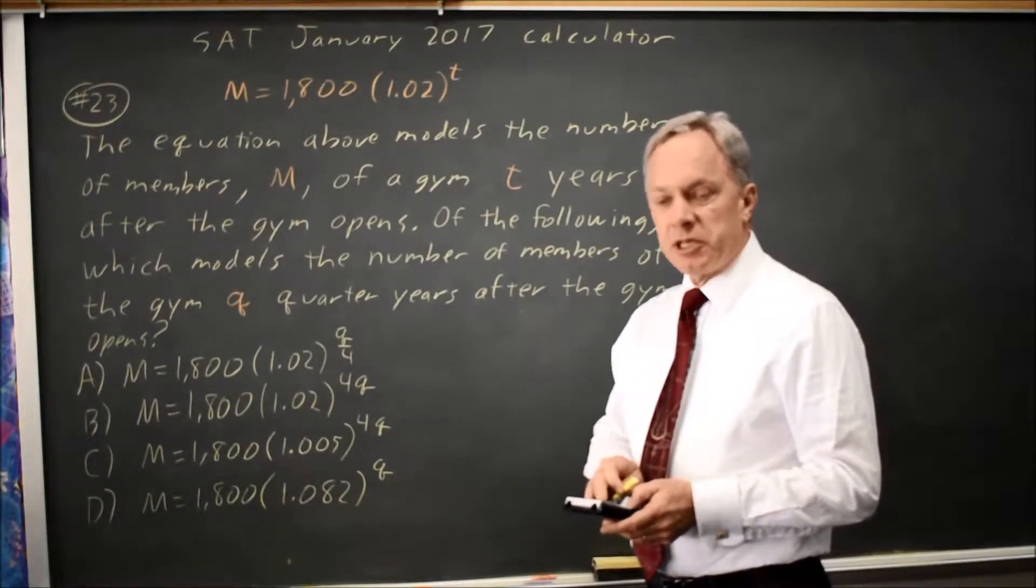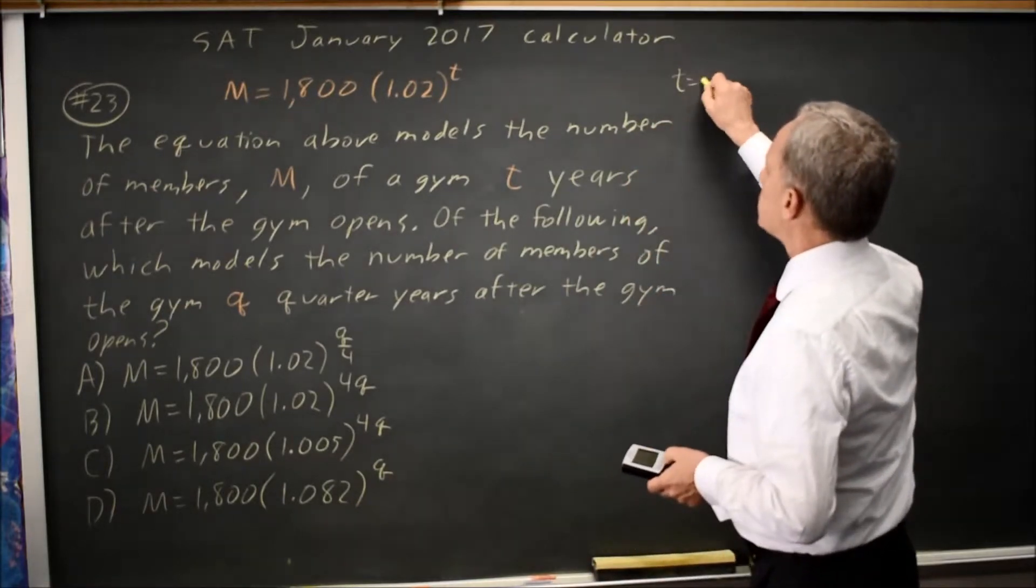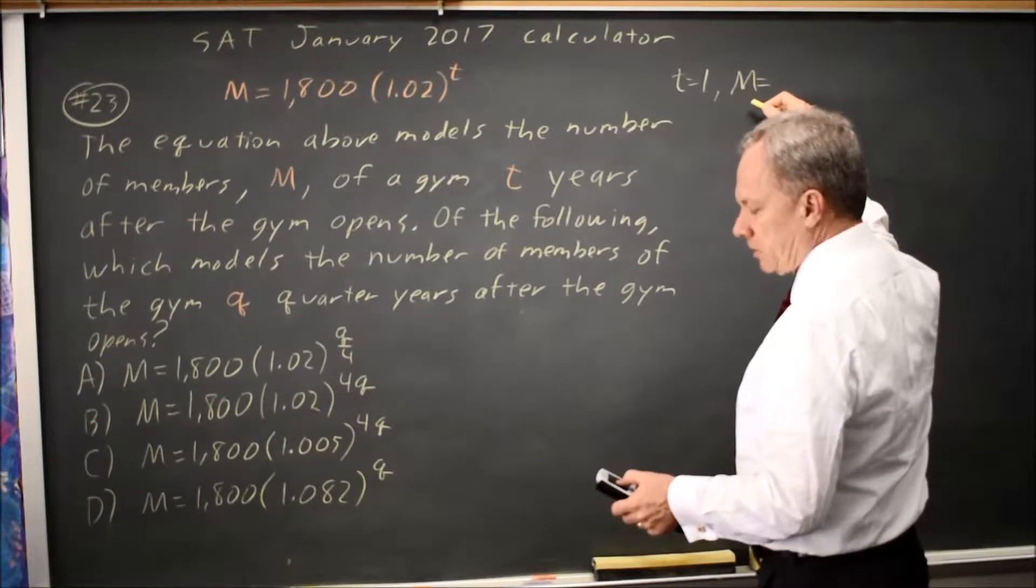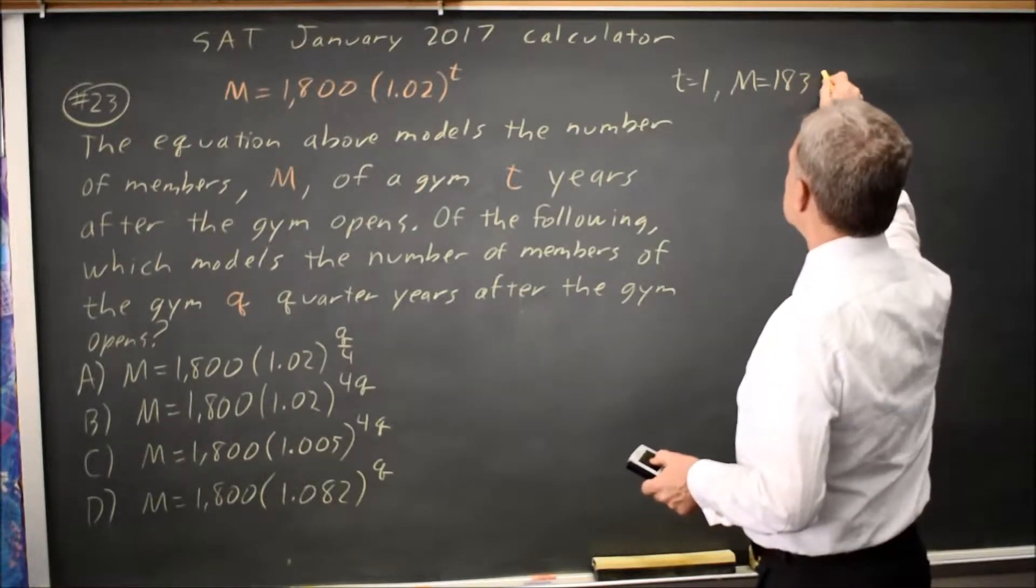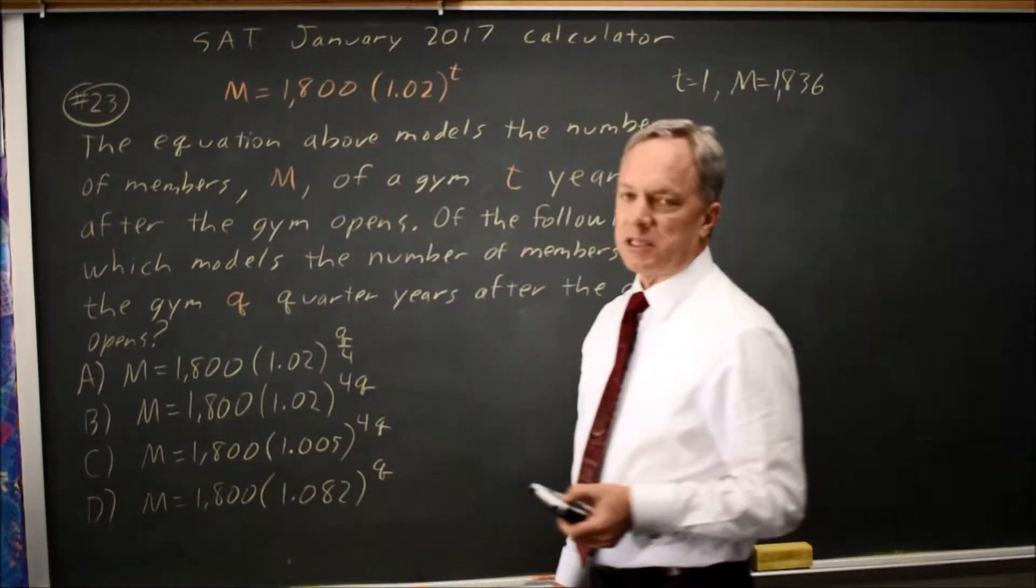The easiest way to do this is to match a particular time period. For example, at t equals 1, m equals 1836 according to my calculator if I put this into y equals and check t equals 1.